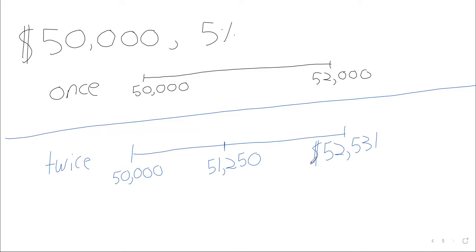And we end up with $52,531, give or take a few cents. In other words, we have $50,000. In this way, caused the investment to be worth more at the end of the year than if it was only compounded once.